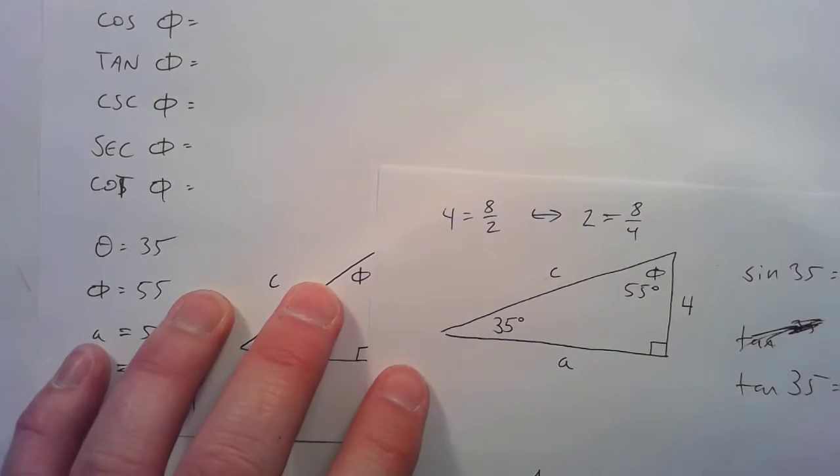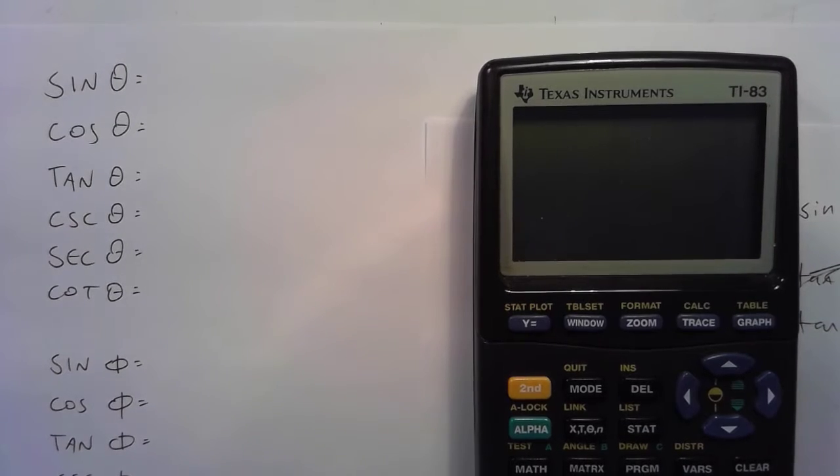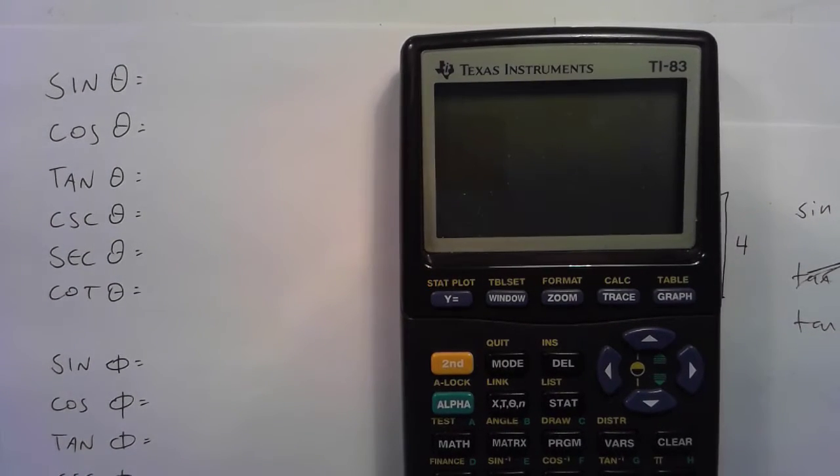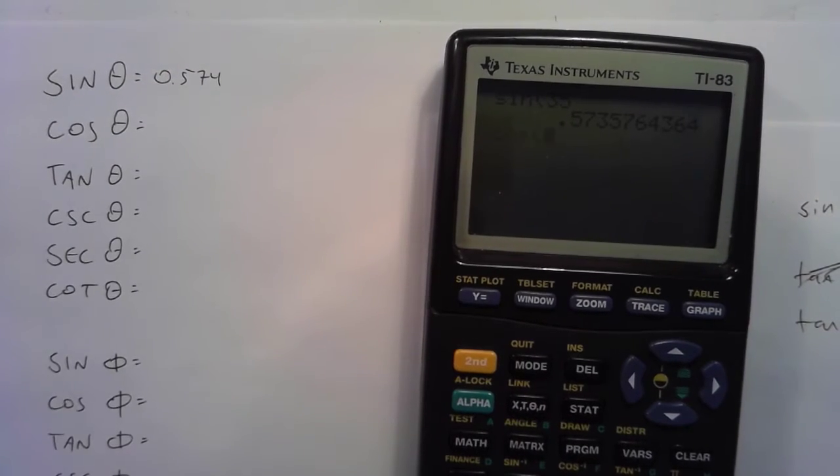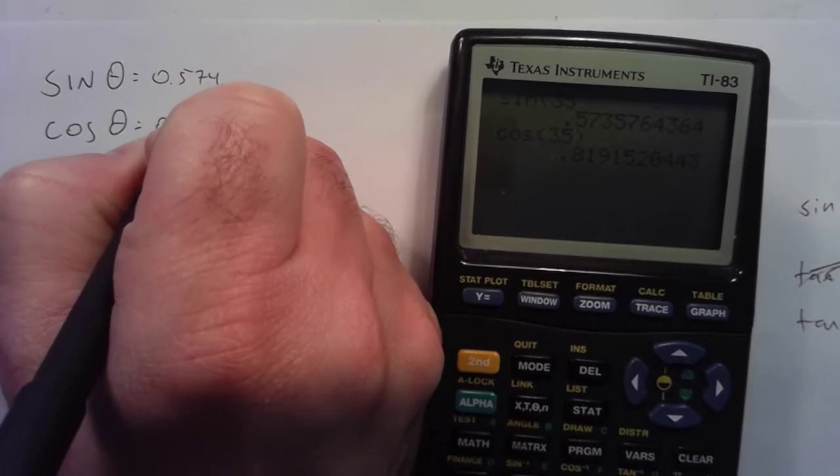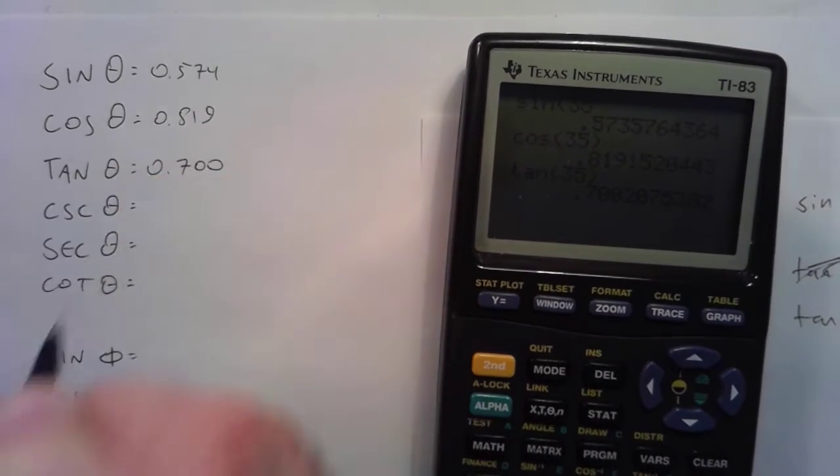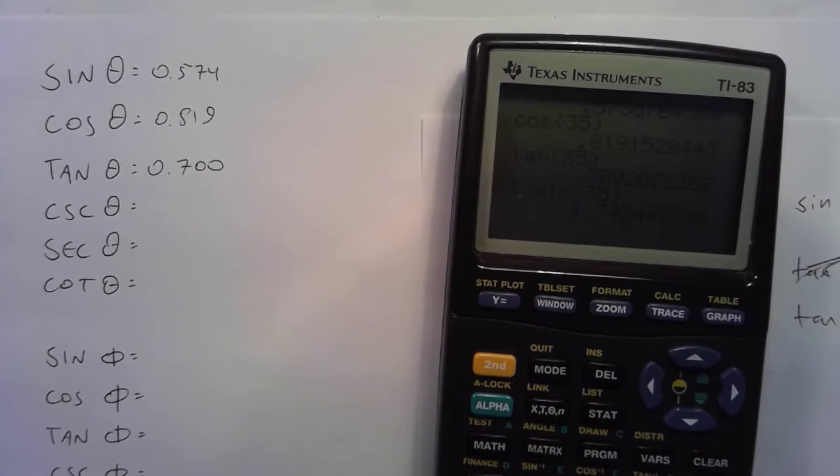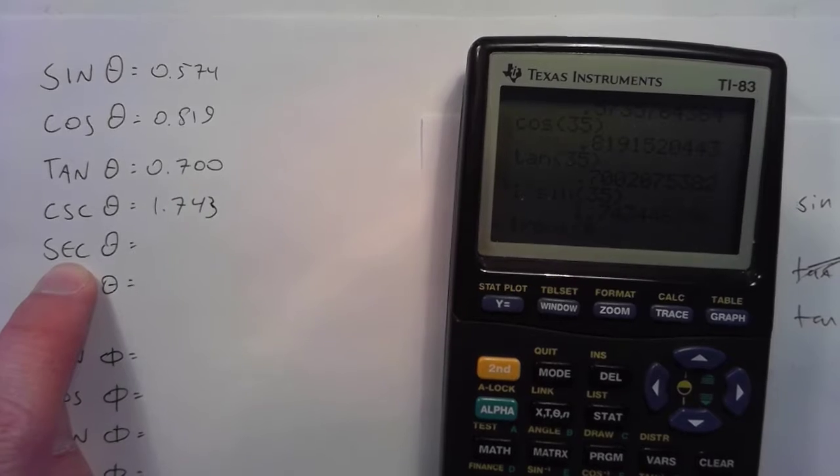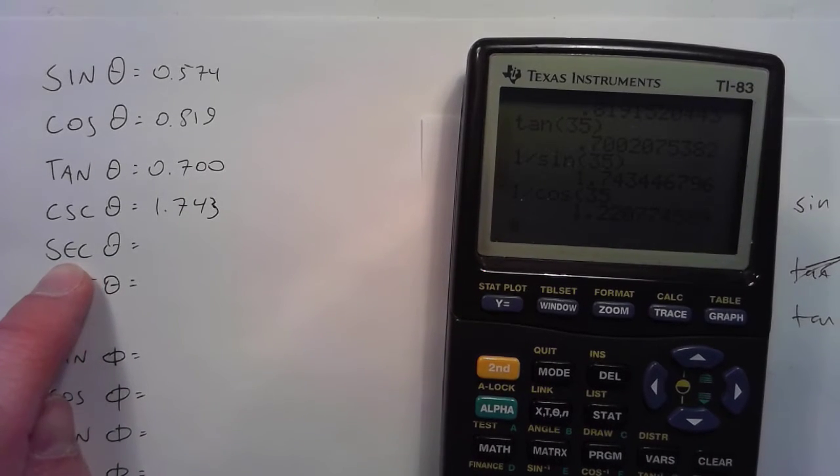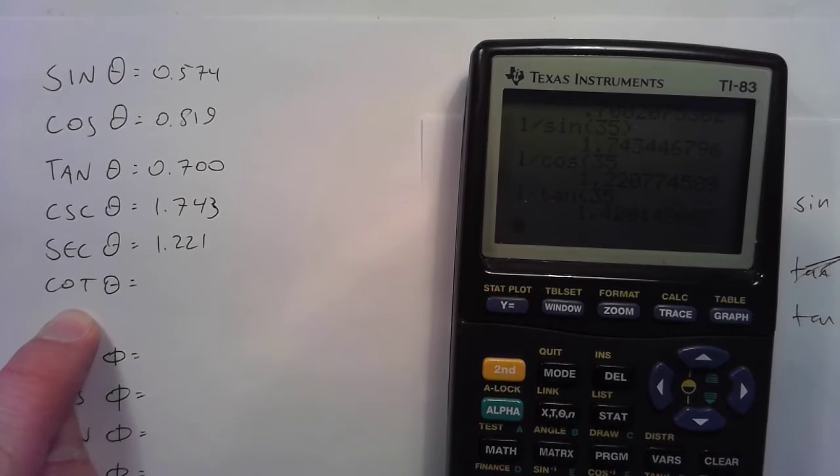At this point, the rest of this is just one big calculator exercise, because all the geometry is done. So, without further ado, I shall now obliterate this line of trig questions. Theta is 35, so I need the sine of 35, 0.574. The cosine of 35, 0.819. The tangent of 35, 0.700. The cosecant is the reciprocal of the sine. That's 1.743. Secant would be the reciprocal of the cosine, 1.221. And cotangent is the reciprocal of the tangent, 1.428.